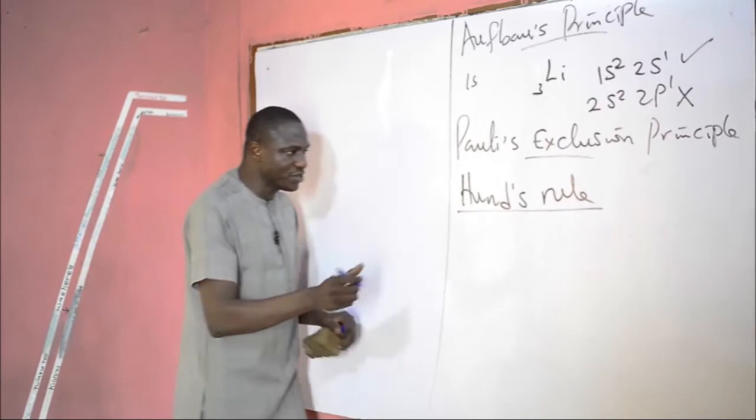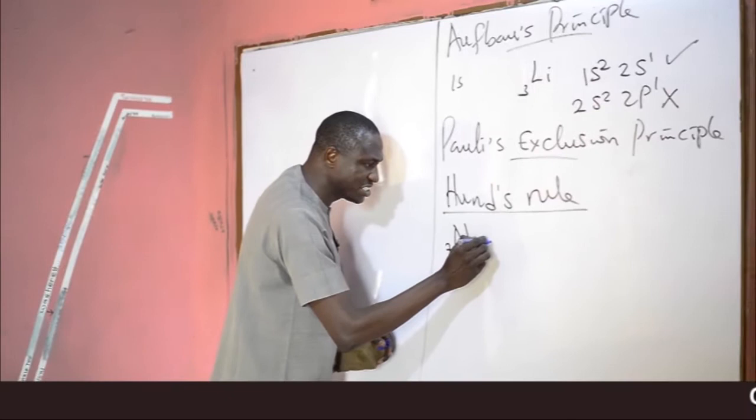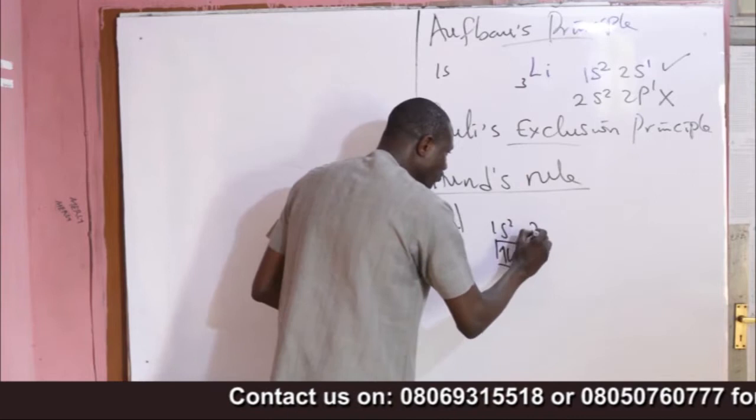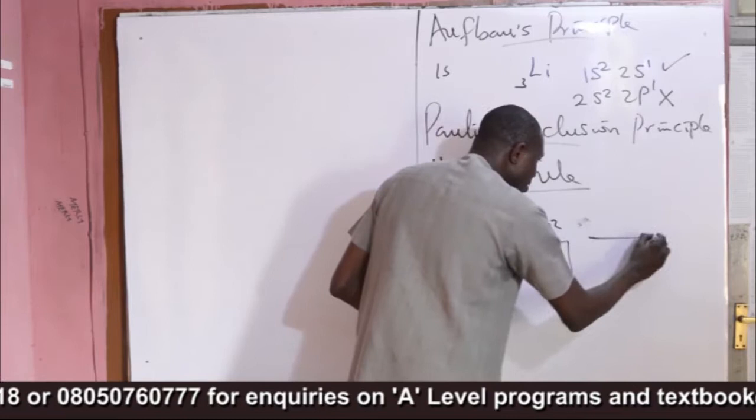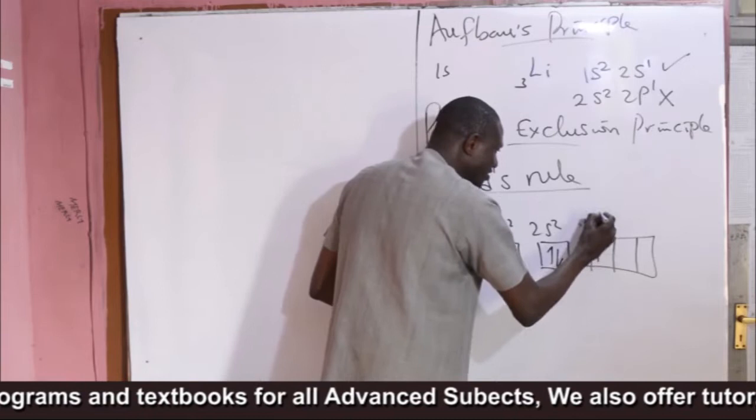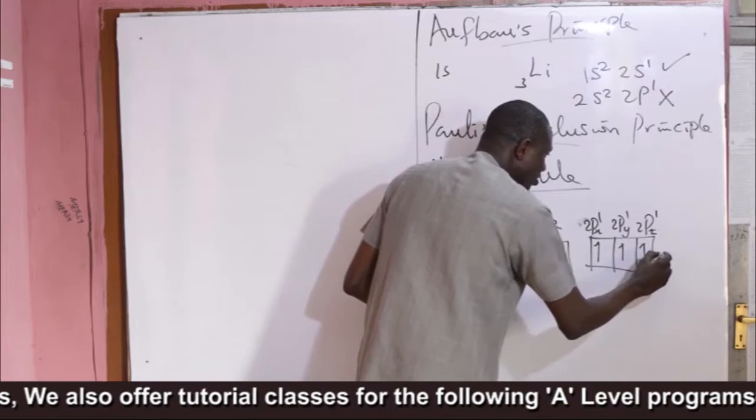A typical example is the electronic configuration of nitrogen. When you want to use Hund's rule, nitrogen is written as 1s2, 2s2. In the orbital diagram, you have 2s2, and you have 2p1, 2p1, 2p1 — that is 2px1, 2py1, and 2pz1 — because p degenerates into 3 orbitals, according to Hund's rule.